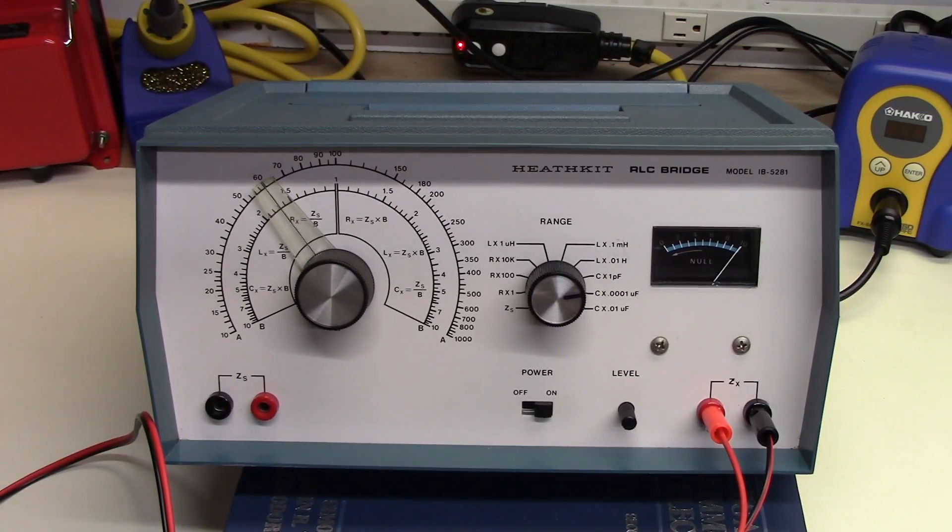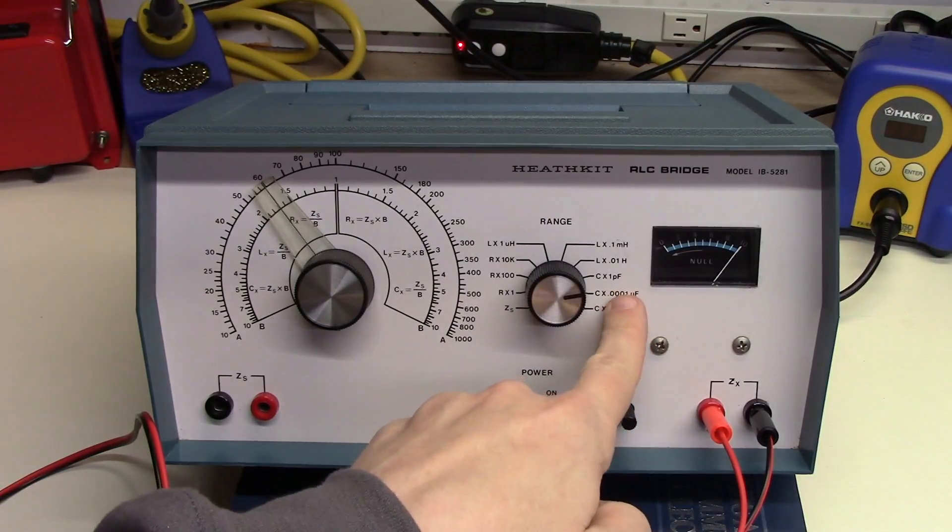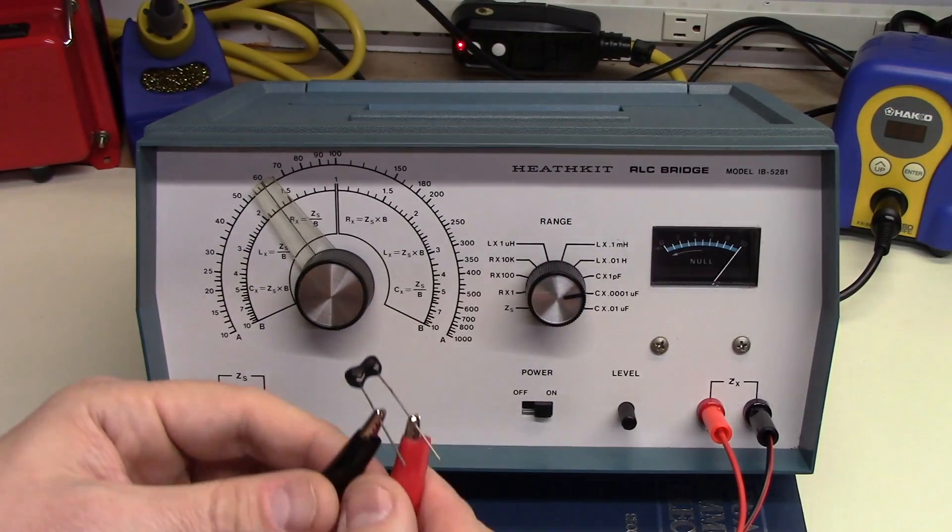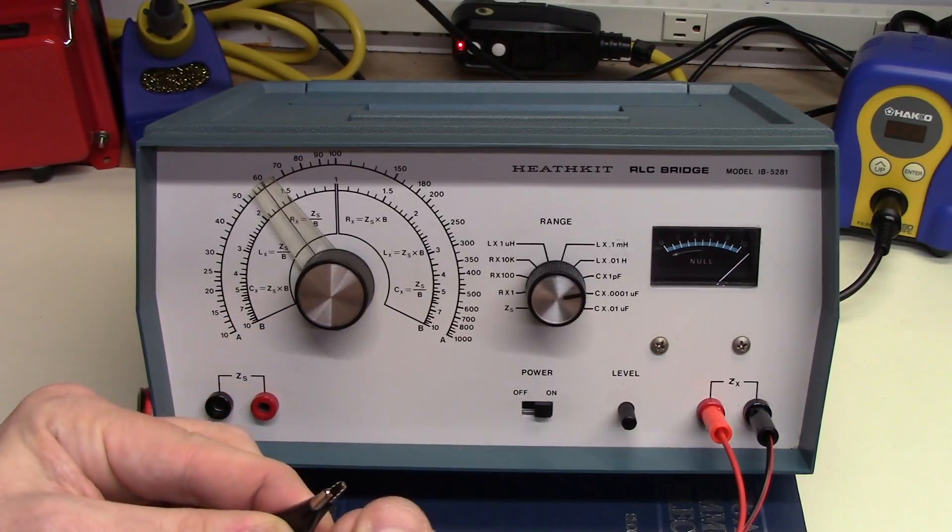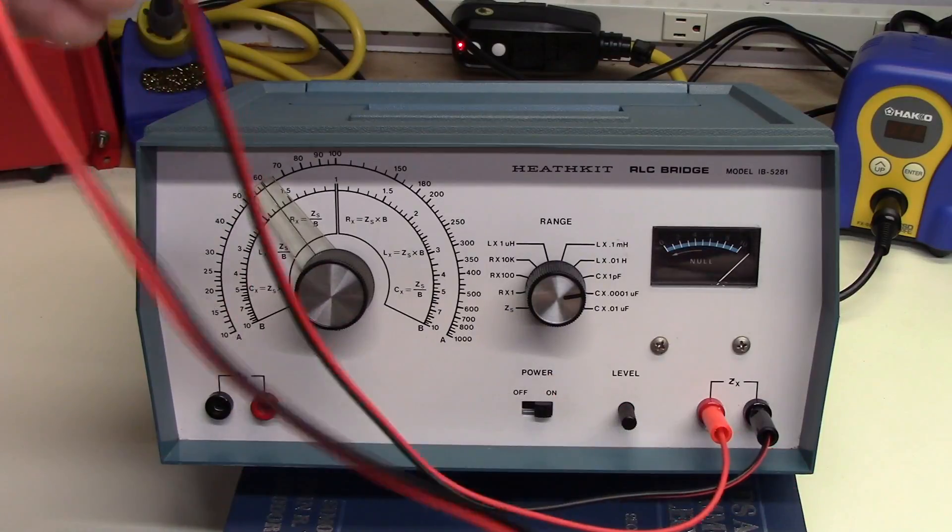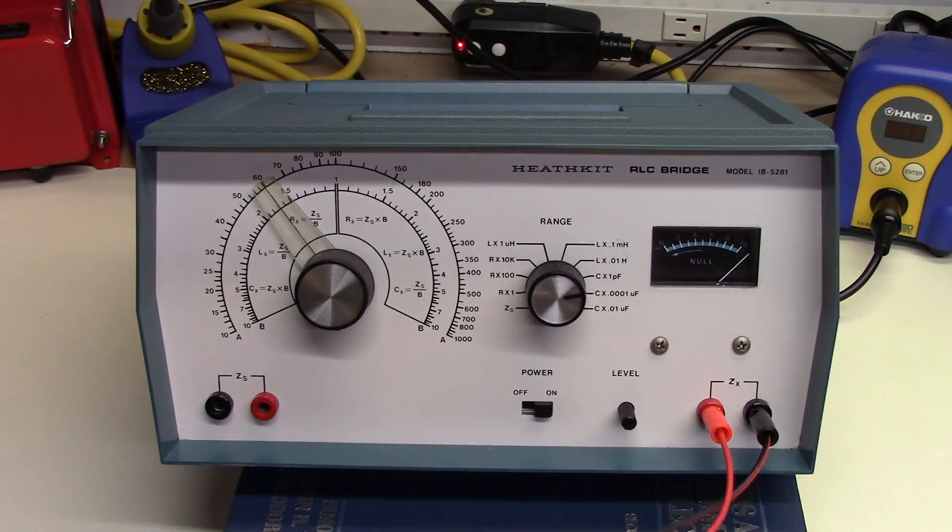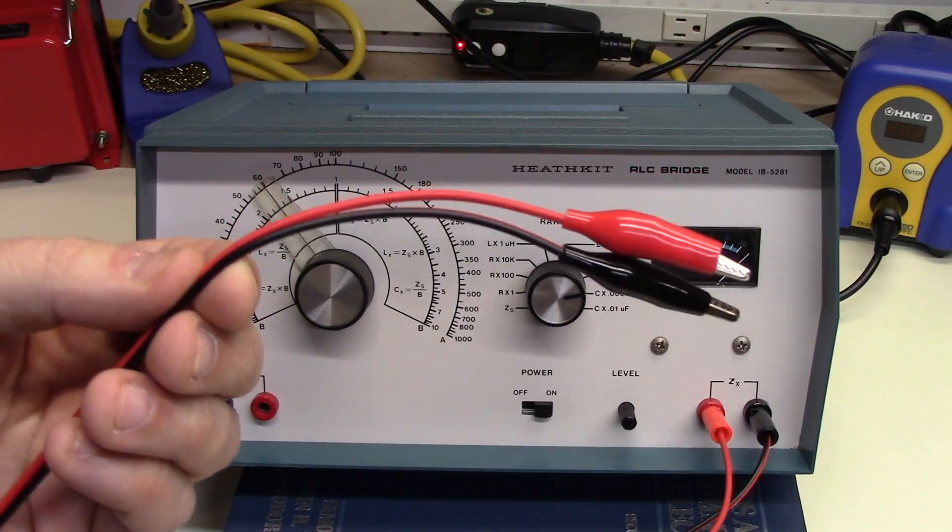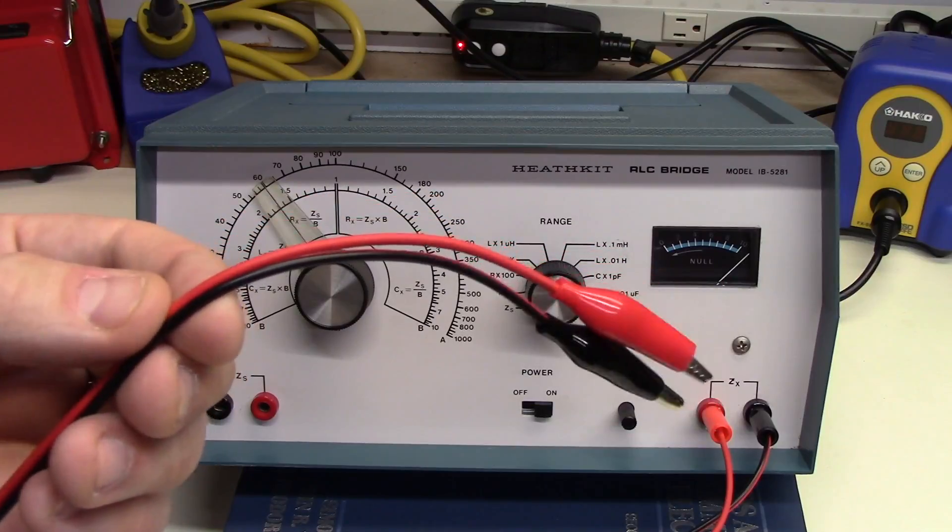So you scratch your head and you say, wow, it must be off on the picofarad scale. And the answer is, well no, it's not. What's going on here? Well, what's going on here is that I've got a patch cord that's the better part of a meter long, and it's two parallel wires. So it's a capacitor.